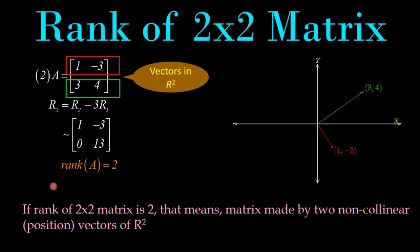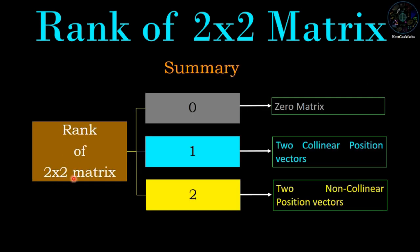Summary for 2×2 matrices: If the rank is 0, the matrix is the zero matrix. If the rank is 1, the matrix is made by two collinear position vectors in R2. If the rank is 2, the matrix is made by two non-collinear position vectors in R2.